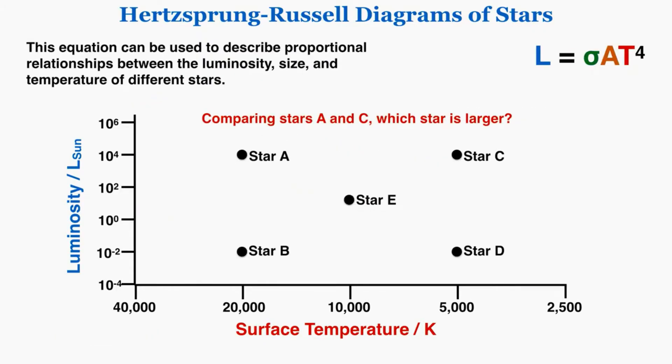This equation—luminosity equals the Boltzmann constant times the area times the temperature to the fourth—can be used to describe proportional relationships between the luminosity, size, and temperature of different stars. I'll use this to answer a few questions about the sizes of different stars on this HR diagram.